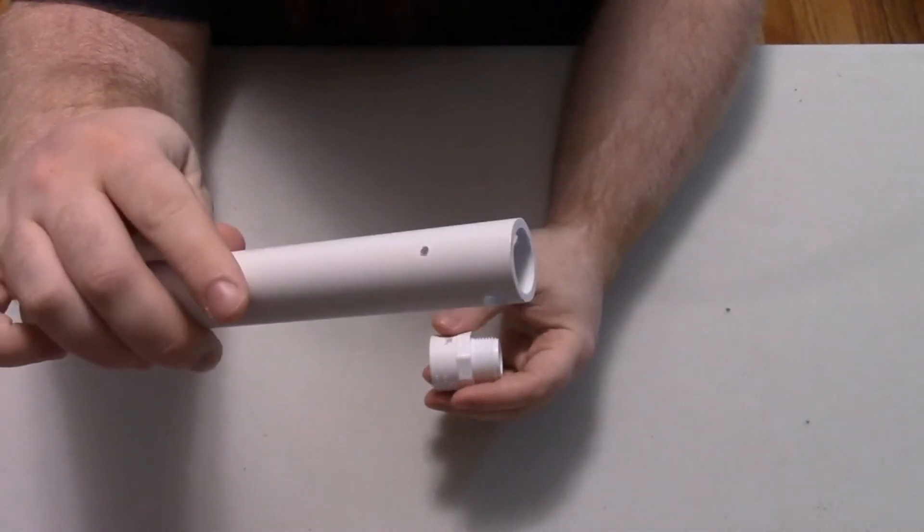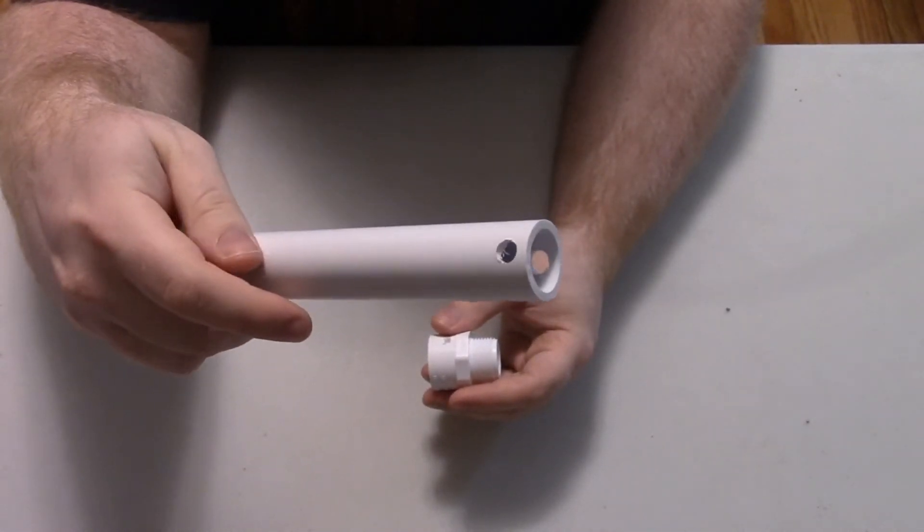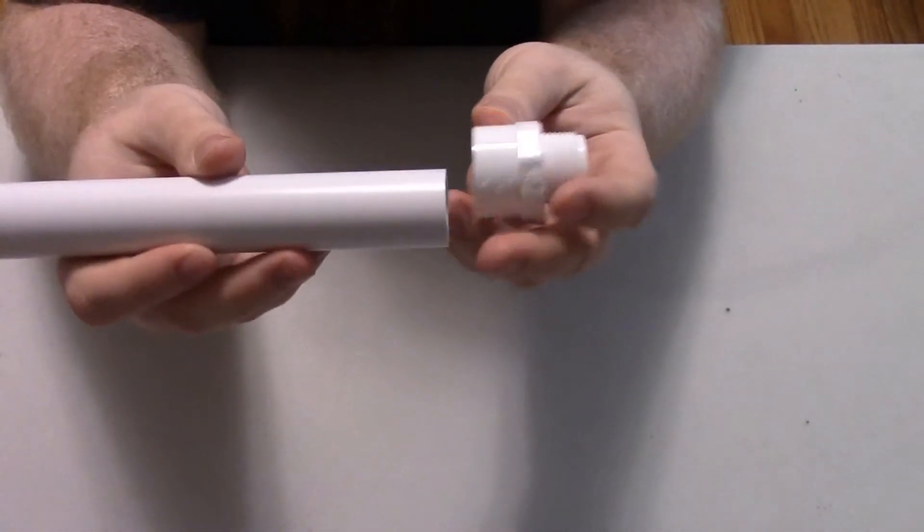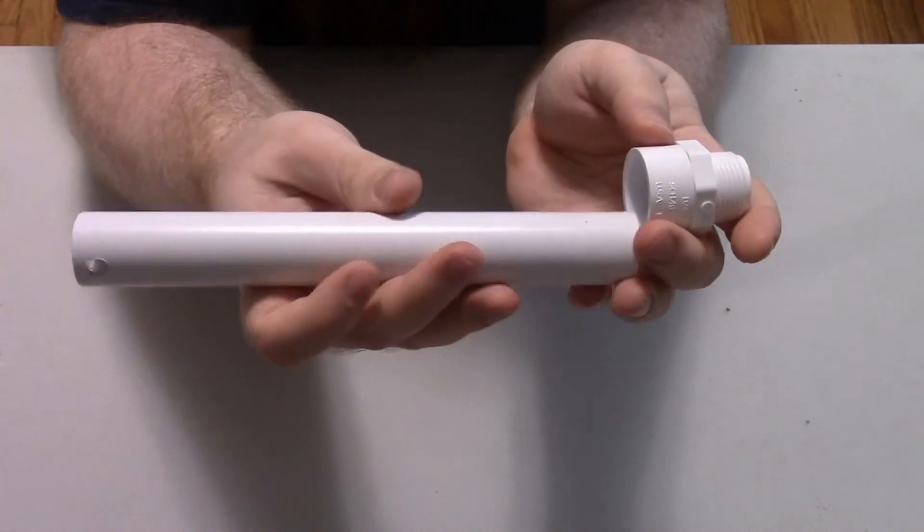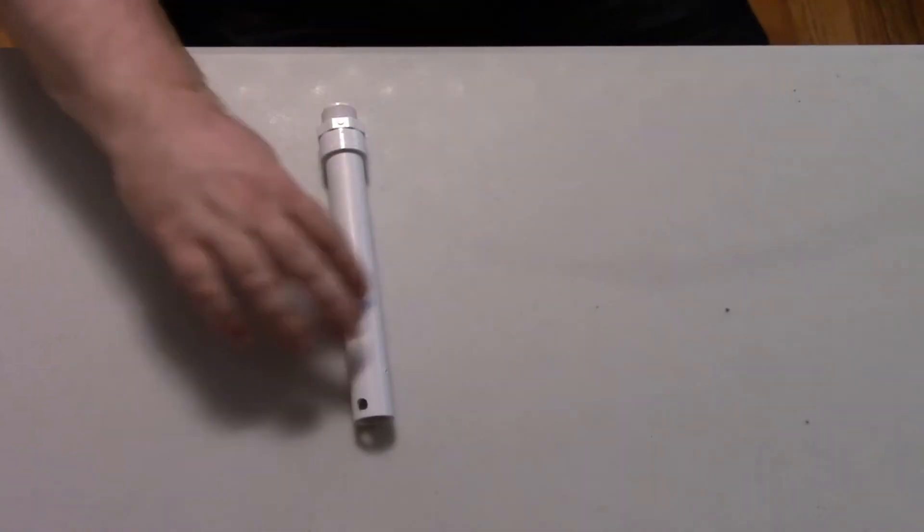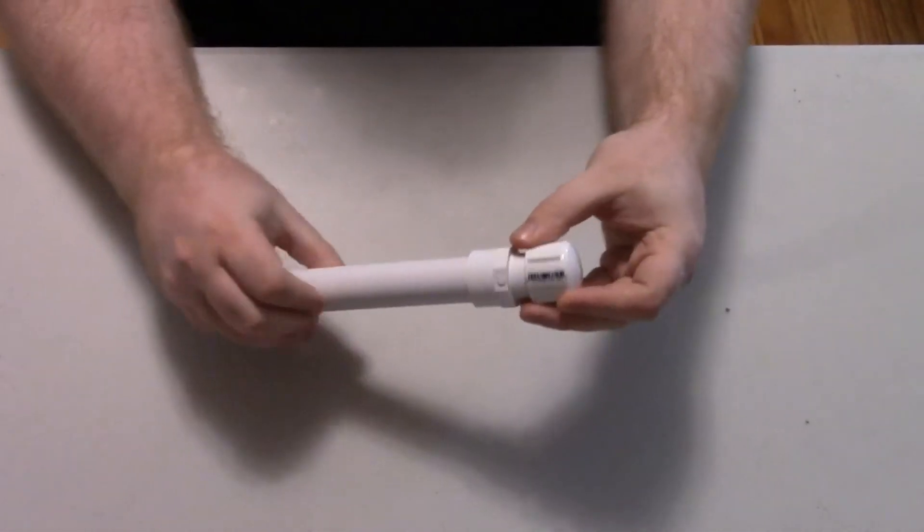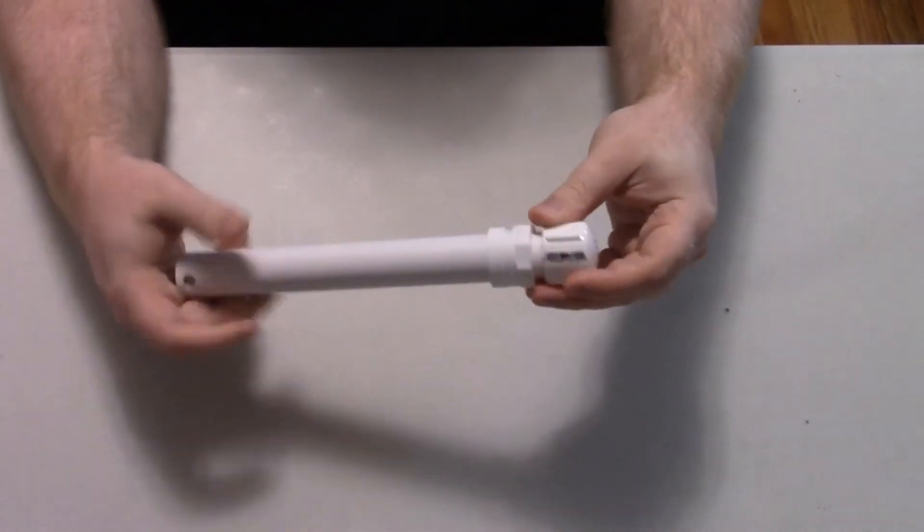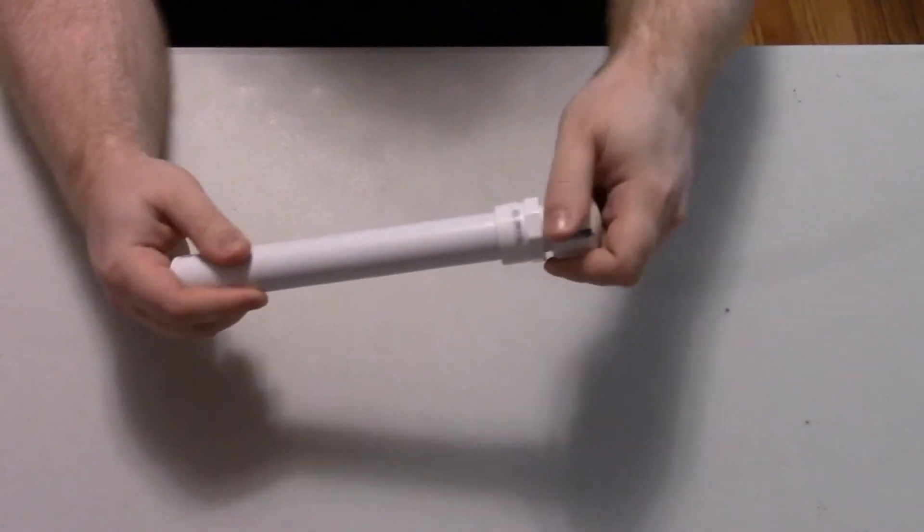To assemble your feeder after painting, slip the non-threaded end of your adapter onto the end of your pipe that does not have holes. Next, screw the threaded cap onto it. This forms the top of your feeder.